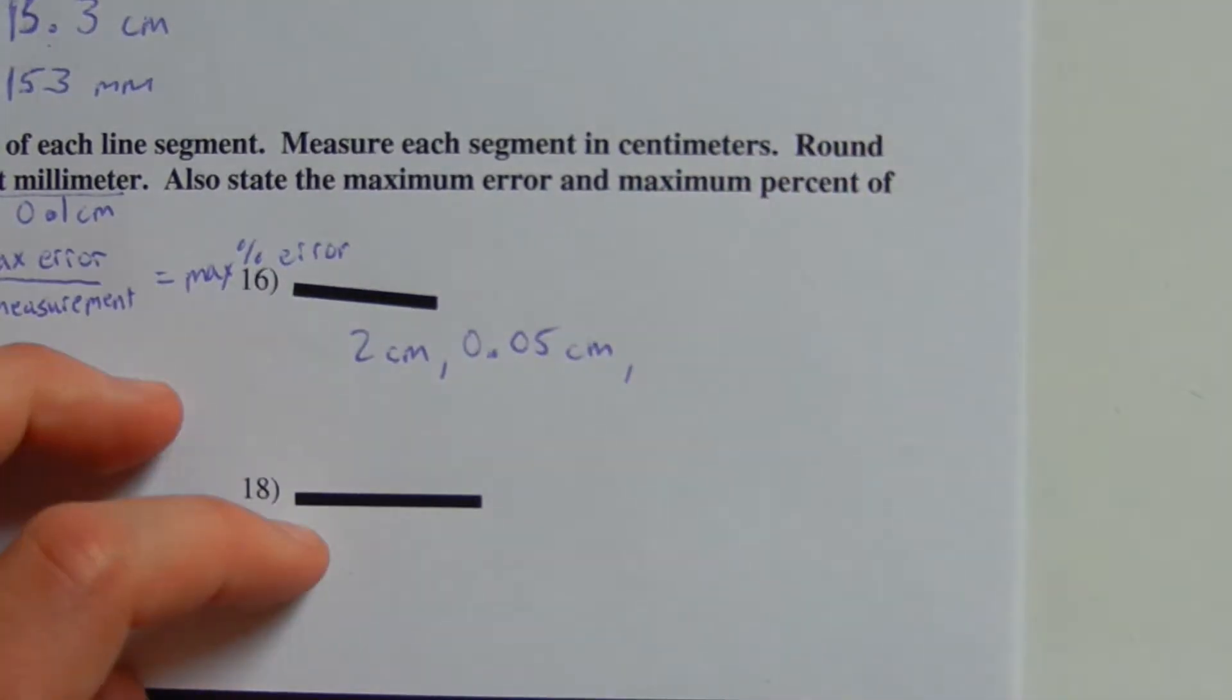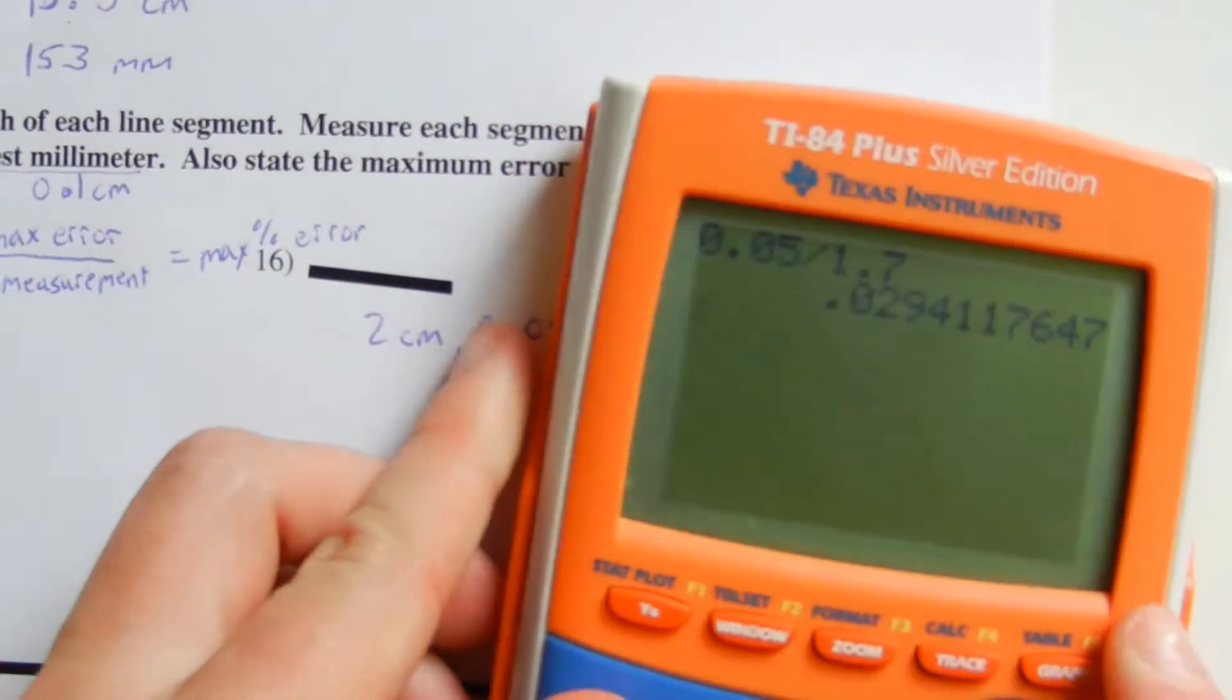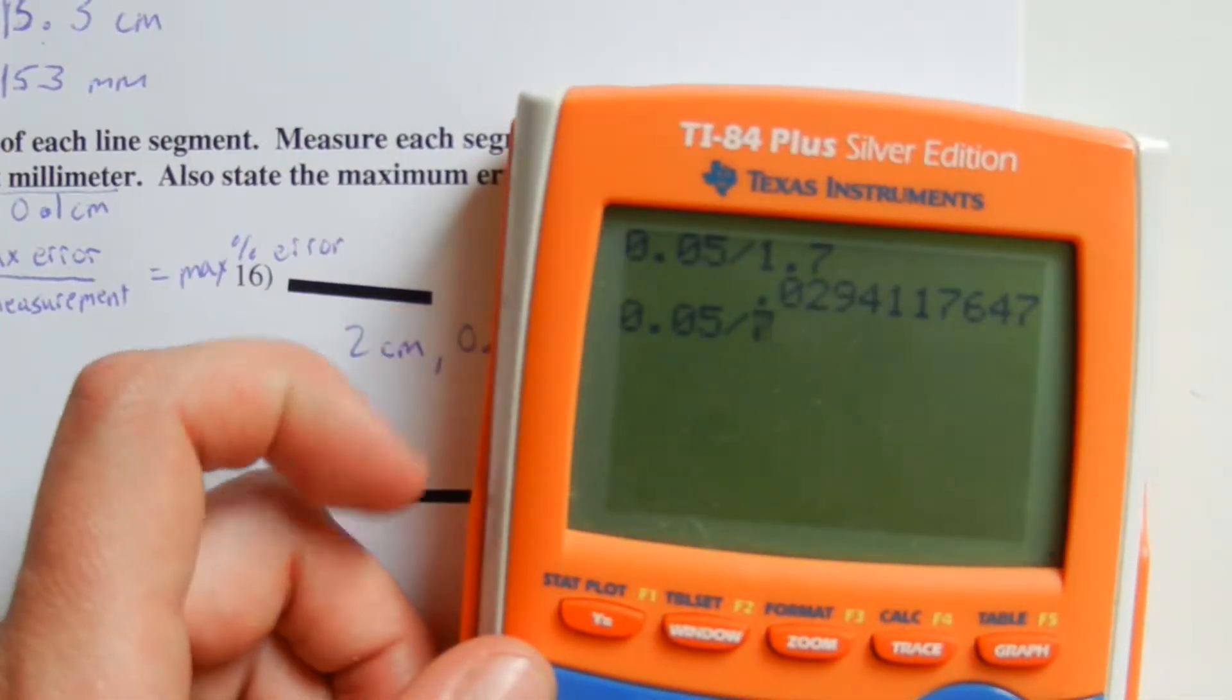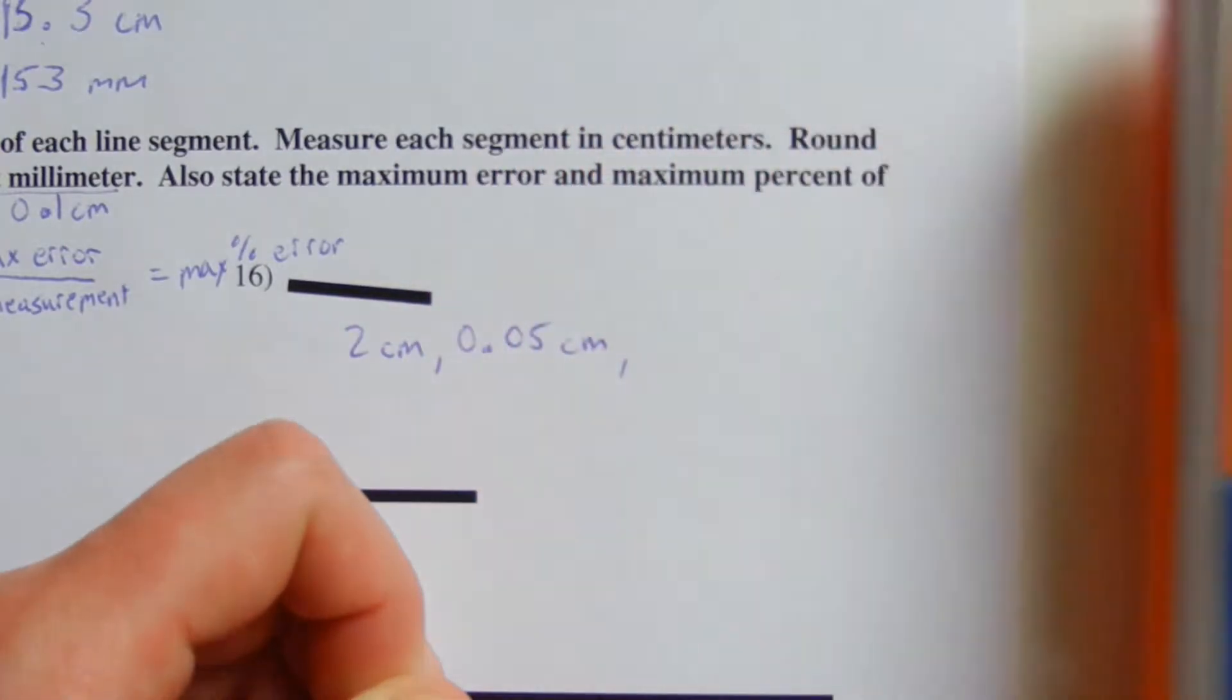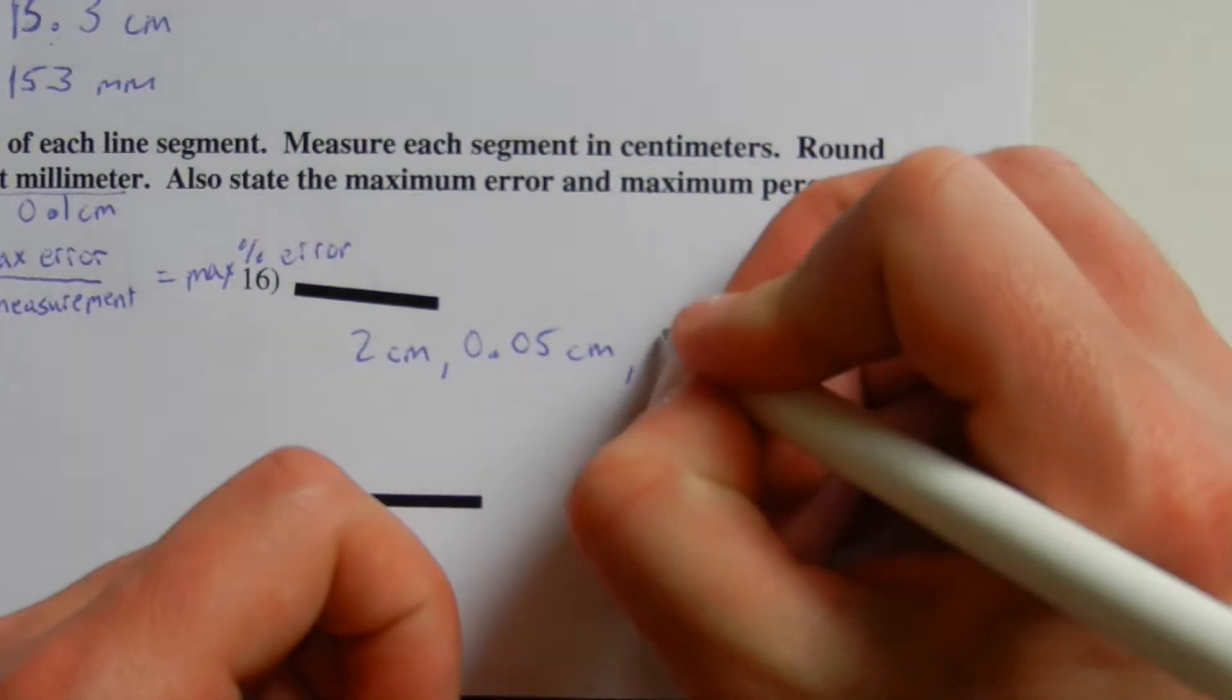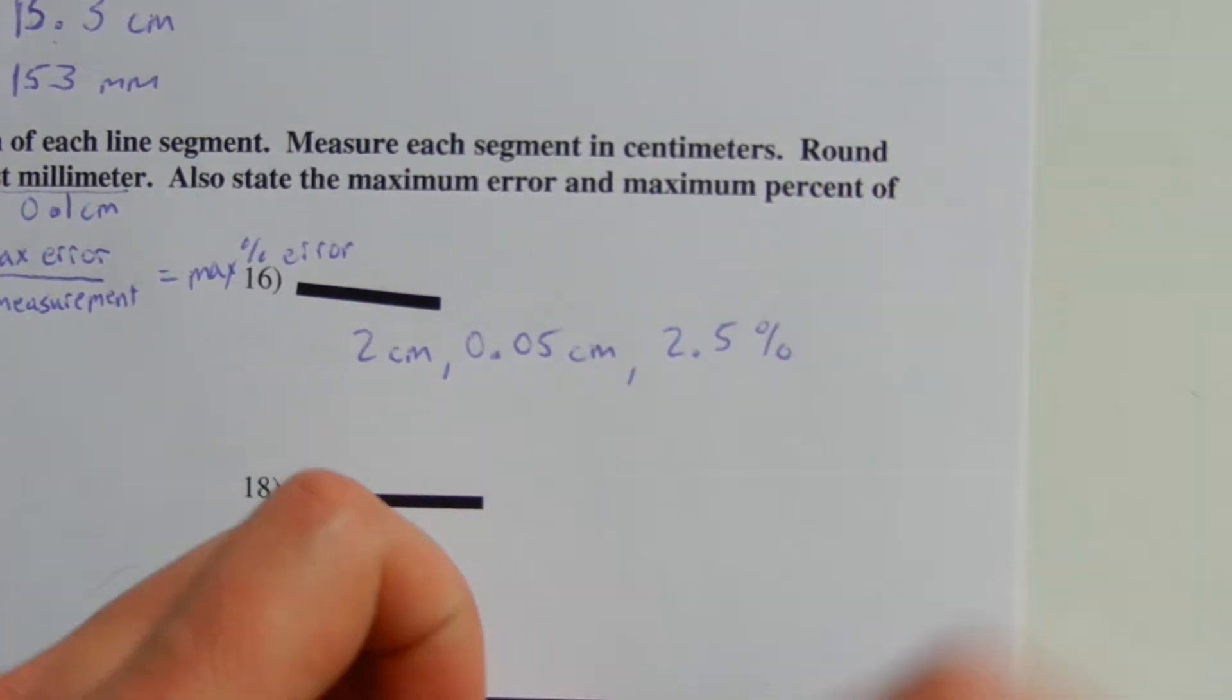So what we're going to do is take that 0.05 and divide it by 2 centimeters this time. That's going to give us 0.025, which as a percent is 2.5%.